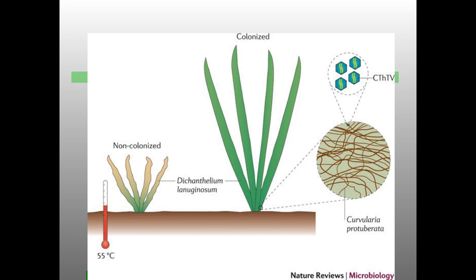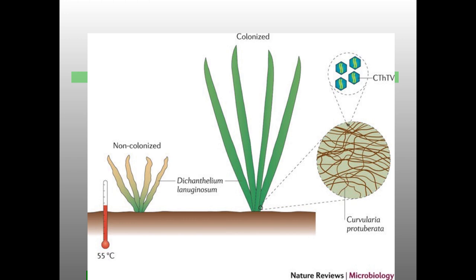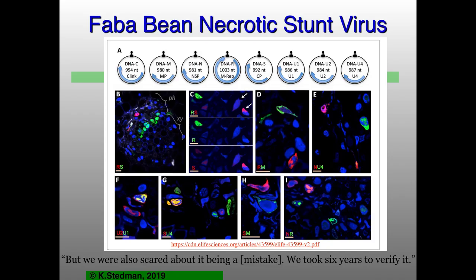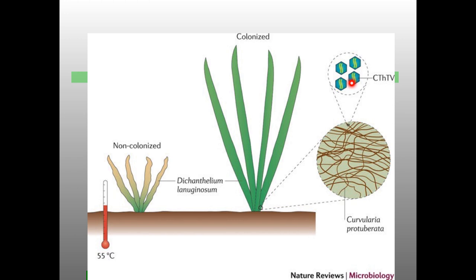There are these really amazing plants growing right next to hot springs, up to about 50-55 degrees Celsius. These particular grasses can only grow at those high temperatures if they have an endophytic fungus growing inside the plant, and only if this fungus is infected with one of these thermal tolerance viruses. So plants are not happy if they're lacking either the fungus or the virus — these are the good viruses, at least as far as the plant is concerned.